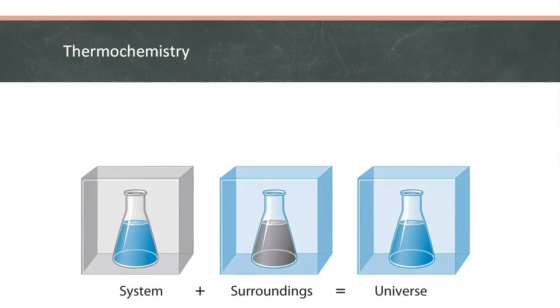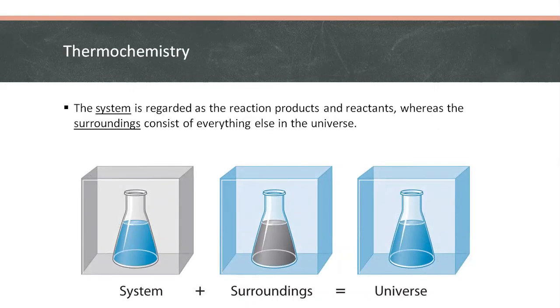Thermochemical changes are often discussed in terms of the system and the surroundings. The system is regarded as the reactions, products, and reactants, whereas surroundings consist of everything else in the universe. A boundary separates the system from the surroundings.